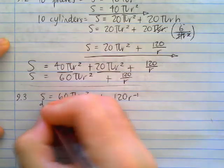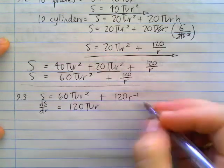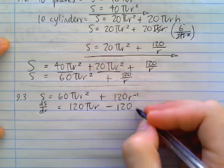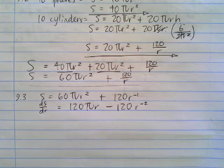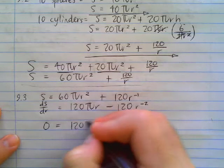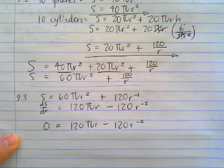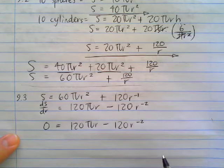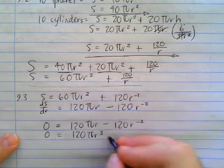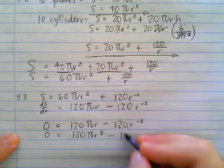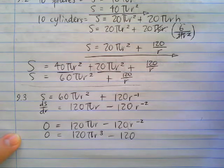Now when we go dS over dr and work out our first derivative, we're going to get 120 pi r and then minus 120 r to the negative 2. At this stage, we could now make our first derivative equal to 0 like that. And we're going to get 120 pi r minus 120 r to the negative 2. We could, if we'd like to, multiply everything by r squared. By multiplying everything by r squared, we're going to get 120 pi r cubed now. And if I times this by r squared, that's going to leave me with 120. Because r to the power negative 2 times r to the power 2 is going to give you r to the power 0, which becomes 1.